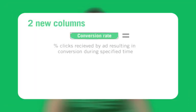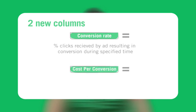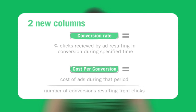Once you have conversion tracking in place, two new columns will appear on all of your campaign management screens. The conversion rate and cost per conversion columns will give you a quick overview of how your campaigns and keywords are doing. Conversion rate is the percentage of clicks received by your ad that resulted in a conversion during a specified time period. Cost per conversion is the cost of your AdWords advertising during that period, divided by the number of conversions you have received as a result of those clicks.